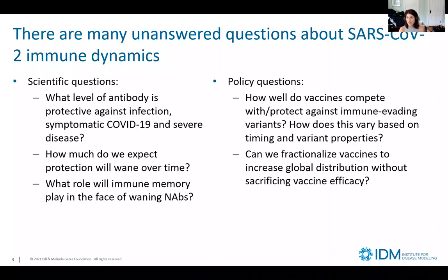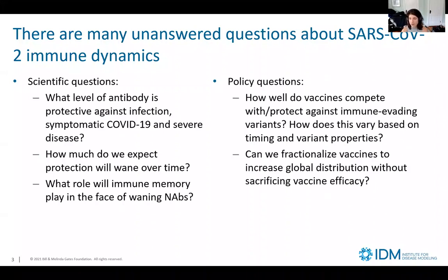In terms of policy questions: how well will vaccines compete with and protect against immune-evading variants? As we've seen from alpha to beta, gamma, delta, and potentially other variants, the virus evolves and these variants have the ability to evade existing immunity. How much does this vary based on timing and variant properties? And another important question being posed right now is whether we can fractionalize vaccines to increase global distribution without sacrificing vaccine efficacy.